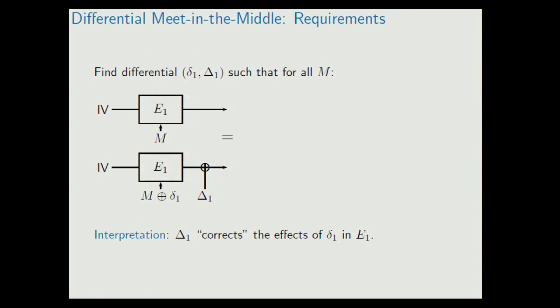Instead, we try to find a differential message difference and then an output difference, such that these two computations give the same result for all messages that we try. You can think of this capital Δ1 as a correction of the small δ1 here that we apply to the message. Already here, you can see this is quite a strong assumption that such a differential exists for all messages, meaning that it's in differential terms a probability-1 differential on the whole state, and we will have to extend this later.